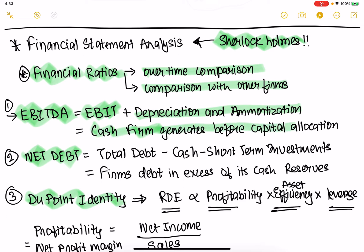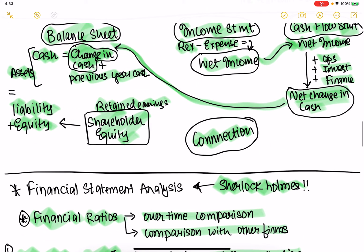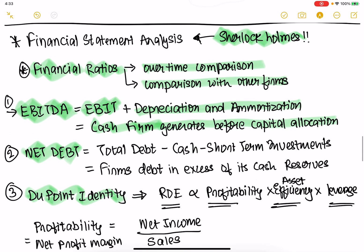With EBITDA, you get the cash that the firm generates before any capital allocation decisions it makes. You can see in cash flow from operations, investments, and financing what it's doing. EBITDA — earnings before interest, taxes, depreciation, and amortization — gives you the cash generating capability without taking into account capital allocation efficiency.